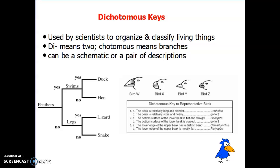To start off with, there are two ways you can see a dichotomous key. You can see it in a branching format, almost like a reverse tournament bracket. The other way, which is most common on the EOC, is in a set of numbered statements. At each number there are two statements — that's where the term 'di' comes from. It means two. So basically it means two branches or two choices at each number or letter.